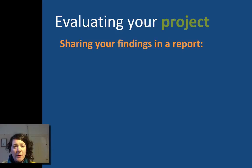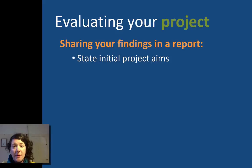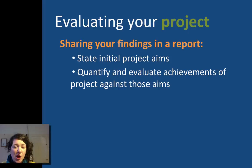When structuring your report you'll want to use quite a systematic way of going through your evaluation. You'll start by stating the initial project aims — the aims that you developed around your proposal for the project. You'll then want to quantify and evaluate the achievements of the project against those aims, using them as markers and finding ways to demonstrate whether you have achieved those aims or not, or to what level.